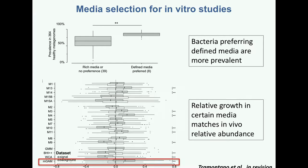Some other interesting observations: there are some species that actually prefer defined media — give them everything and they don't like it so much. Some species grow only in defined media and show very poor growth in rich media. The bacteria that prefer defined media are actually significantly more prevalent, suggesting a strategy of living in niches where resources are scarce. Interestingly, relative growth in certain media correlates very well with relative abundances across different people, meaning we can use these media for in vitro screenings.